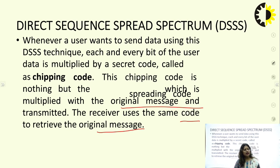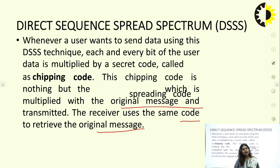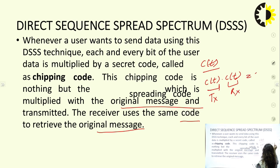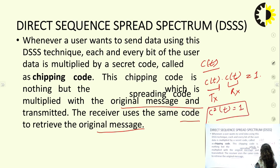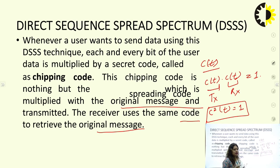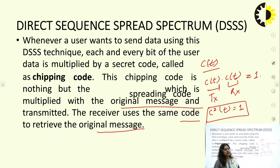At the receiver, the received modulated signal is again multiplied with the chipping code. The chipping code has an important property: if the chipping code is defined as C(T), then C(T) multiplied twice — at transmitter and receiver — gives unity, i.e., C²(T) = 1. So when the receiver multiplies with the chipping code again, the C²(T) term becomes 1, leaving only the original message signal. This is then demodulated and filtered to remove higher frequency components, yielding the original transmitted data.